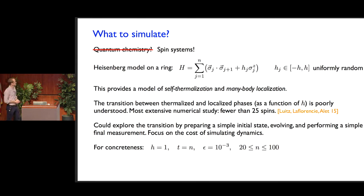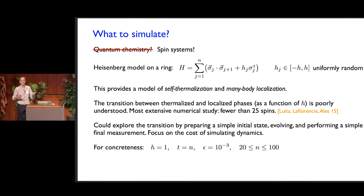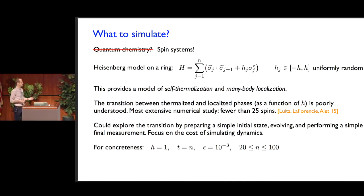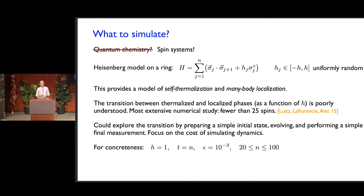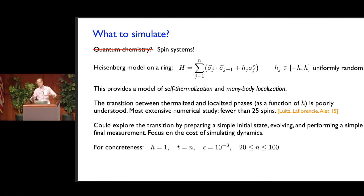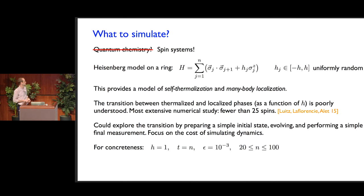We're going to make some very concrete choices. We'll take the disorder parameter H equal to 1. We'll take an evolution time proportional to the system size, because to start seeing interesting things happen, at least enough time for an excitation to propagate across the entire system is needed — and since it's one-dimensional, that's a time proportional to the system size. We'll take an error of 10 to the minus 3 — pretty small but not too small. And we'll look at systems in the range of about 20 to 100 spins. These are cases where simulating the dynamics explicitly on a classical computer would be very difficult, certainly at the upper end of this range.